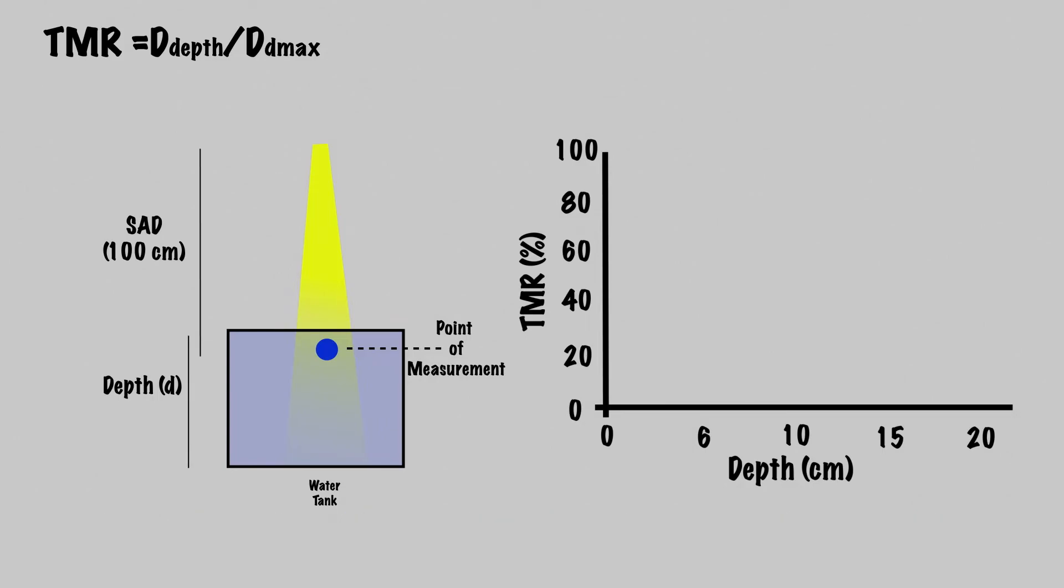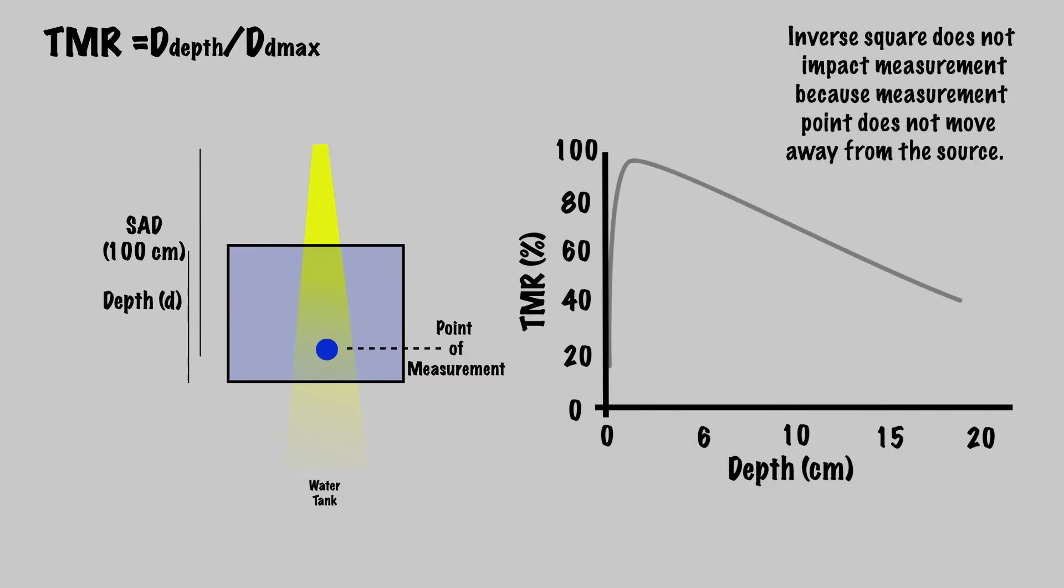Up until this point, it is exactly the same as PDD. But here's the deal. TMR is PDD with the distance from the source to the point of measurement held constant. So inverse square does not come into play here.